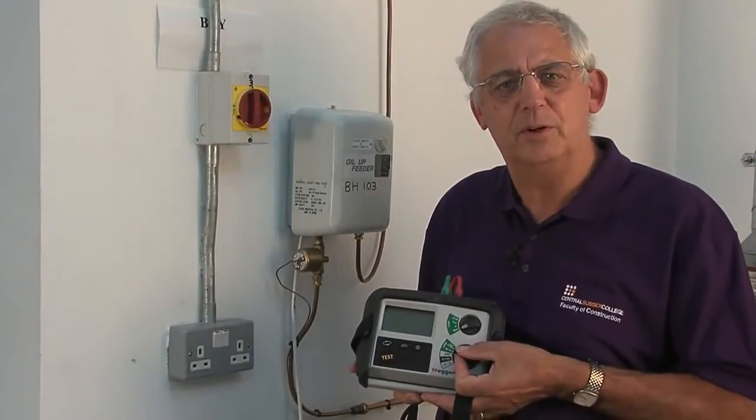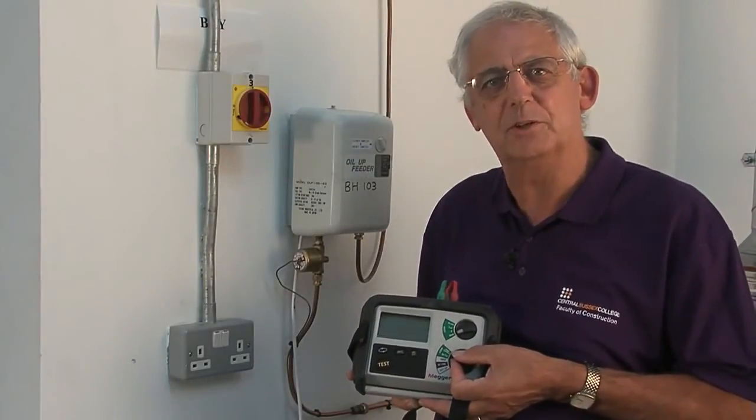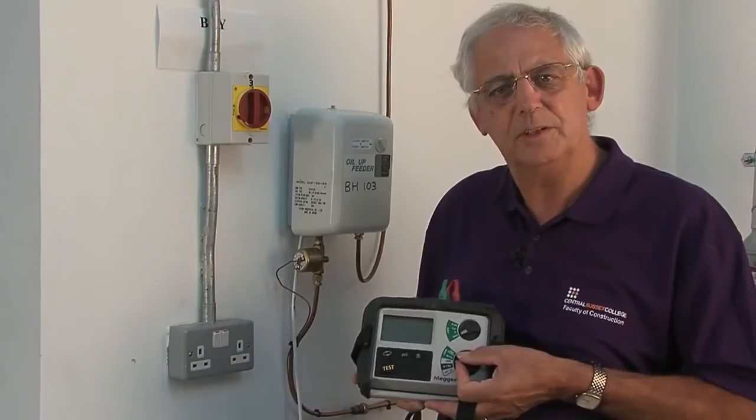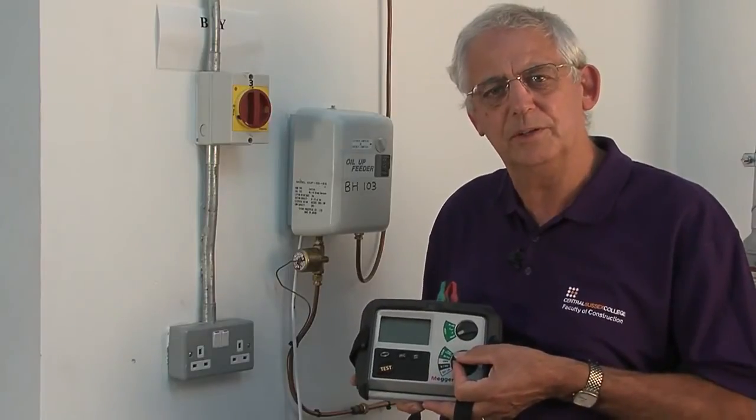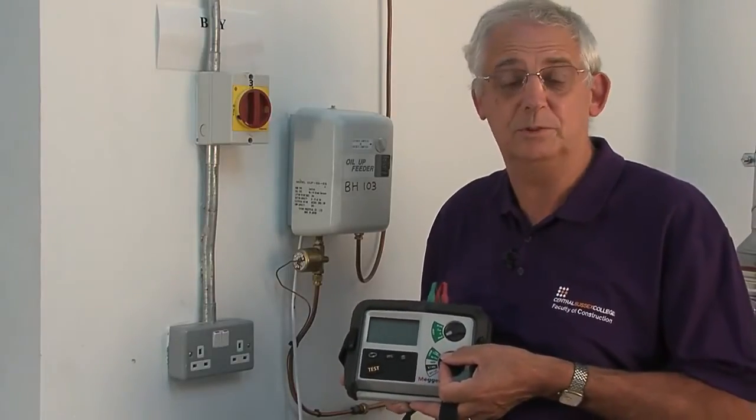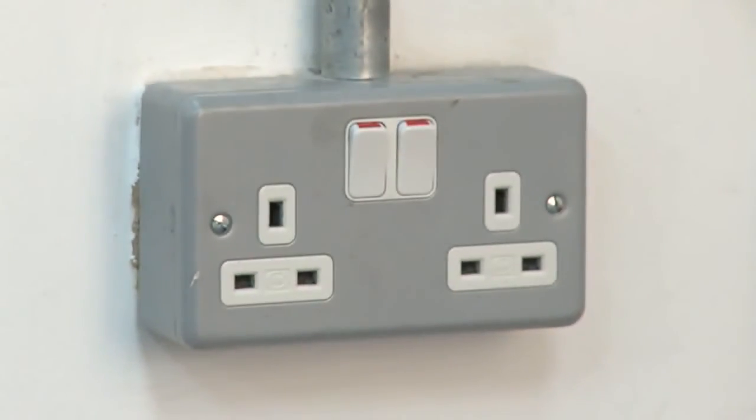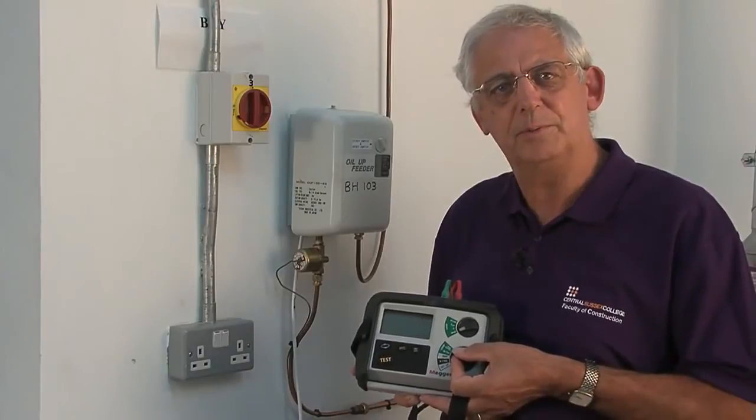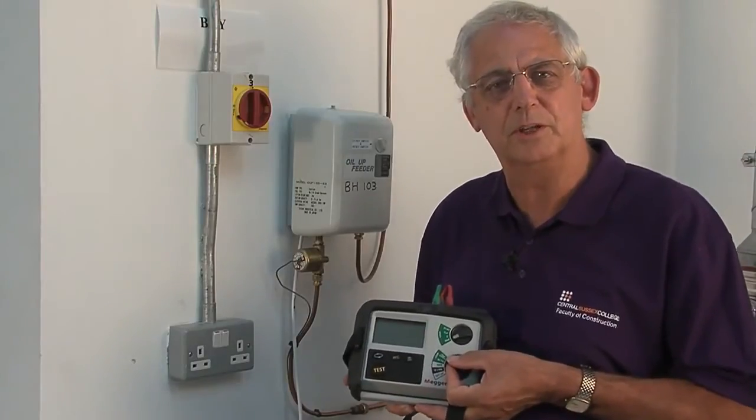We're going to carry out an earth fault loop impedance test on this socket outlet. The reason for the test is to ensure that the earth fault loop impedance, which we call ZS, is low enough to ensure that enough current can flow through the circuit to operate the protective device in the required time.